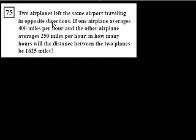Problem 75. Two airplanes left the same airport traveling in opposite directions. If one plane averages 400 miles per hour, so let's see.